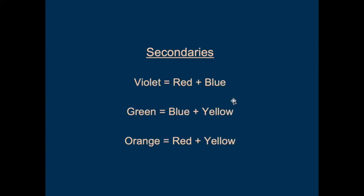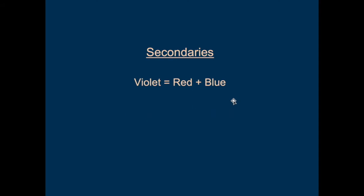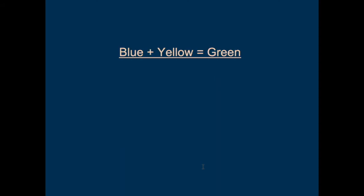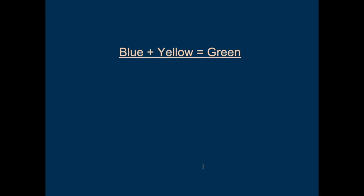We're going to try something. We're going to make violet — take a red, mix it with blue. But use very specific pigments: mix phthalo blue and cadmium red light. On your palette — this is not handed in, so just go for it. If it looks too blue, add more red; if it looks too red, add more blue. Stop the presentation, mix them up, and return when you're ready. Okay, how did it go? You're probably pretty disappointed with your mix — I'm not too sure you got a lot of purples there.